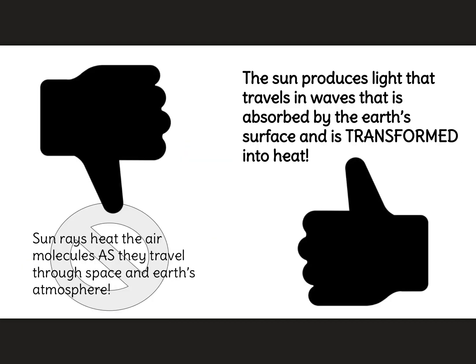As we wrap up this lesson, I want to point out something that many of you might have thought when we first started. Many of you thought that the sun's rays heat the air molecules as they travel through space and into the Earth's atmosphere — but this is not how the Earth's atmosphere gets heated. Many people think that it is, but it's not. Scientifically speaking, the sun produces light that travels in waves, which is absorbed by the Earth's surface and then transformed into heat. So the light energy has to be absorbed by something — and what is it absorbed by? The Earth's surface. This is how the Earth begins to be heated.